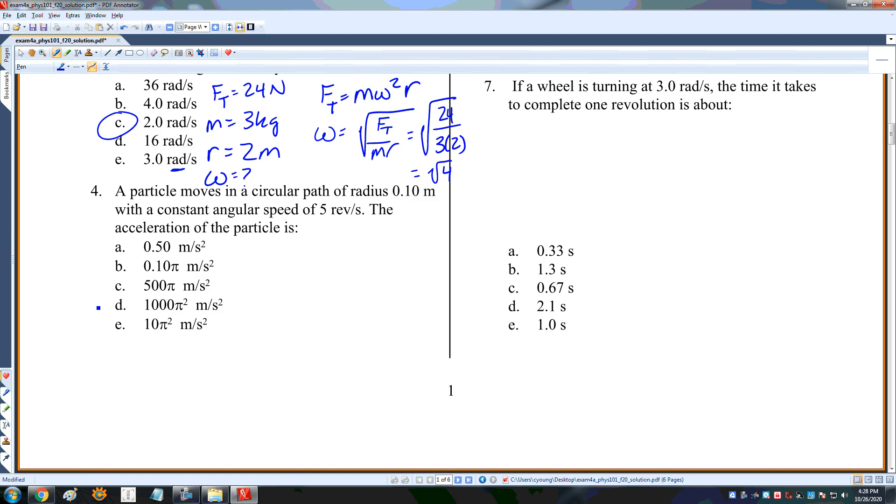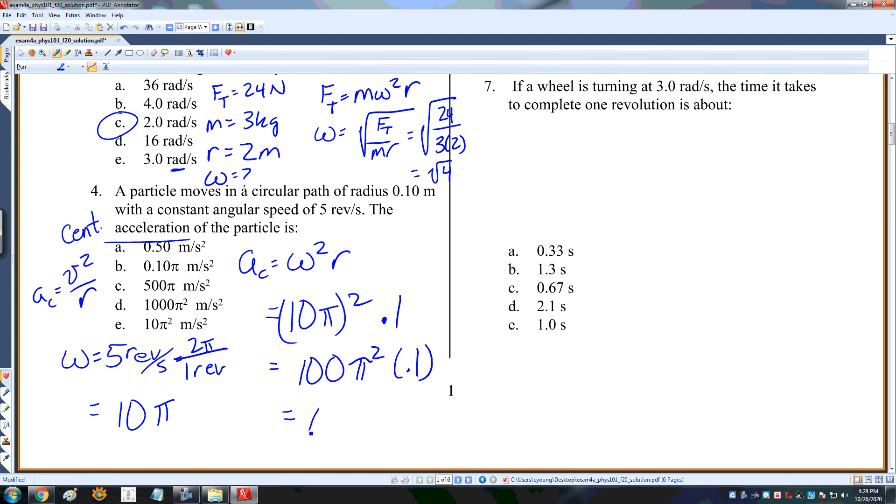Particle moves in a circular path of radius 0.1 meters with a constant angular speed of 5 revolutions per second. The acceleration is the centripetal acceleration, which is equal to omega squared r. I'm given omega in revolutions per second, so I need to convert that into radians per second. In one revolution there are 2 pi radians, so that's 10 pi. The centripetal acceleration is 10 pi squared times the radius, which is 0.1. So that's 100 pi squared times 0.1, or 10 pi squared. So E is the right answer.